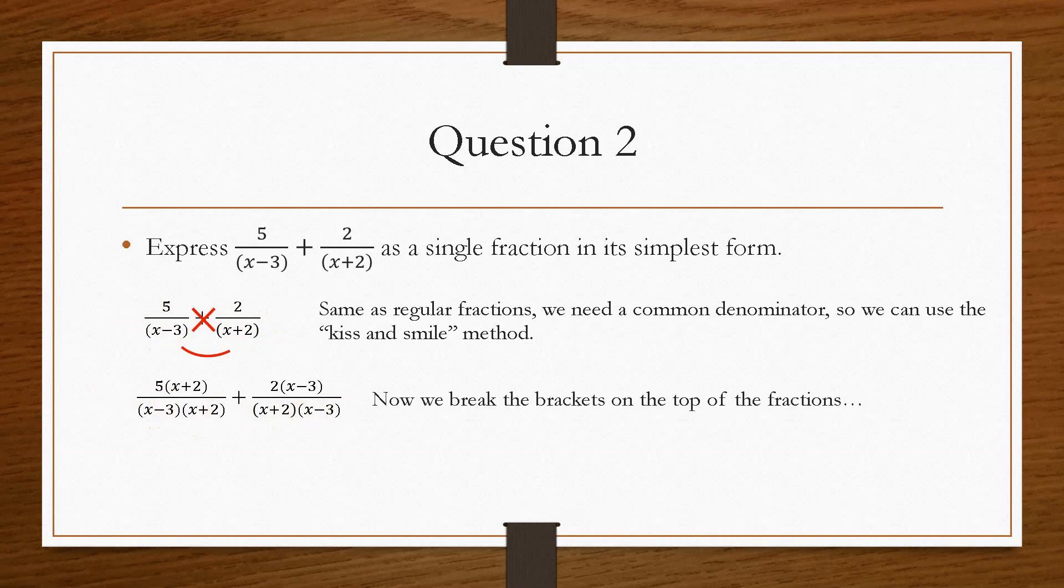So now what we can do is break the brackets on the top of the fractions, and that will give us 5x plus 10 over x minus 3, x plus 2, plus 2x minus 6 over x plus 2, x minus 3.